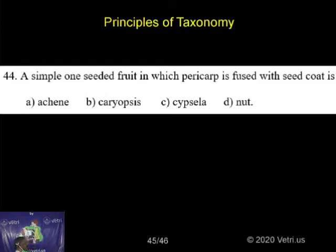A simple one-seeded fruit in which the pericarp is fused with the seed coat is: A. Achene, B. Caryopsis, C. Cypsela, D. Nut.